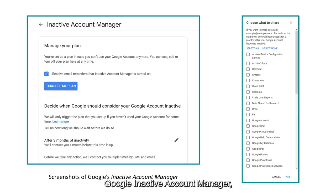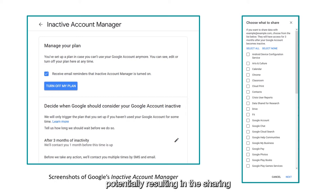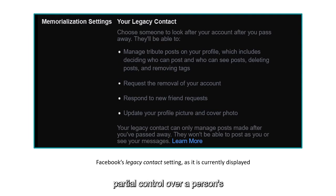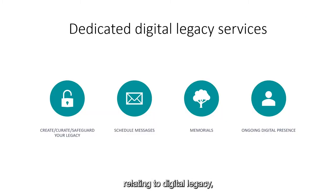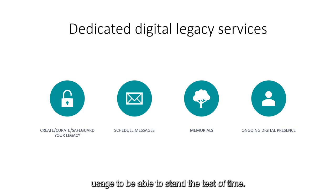Google, in 2013, developed the Google Inactive Account Manager, which operates on a form of the deadman switch — accounts that have been inactive for a given amount of time will trigger predefined steps, potentially sharing specific parts of the user's Google data with named individuals. Facebook introduced in 2015 a legacy contact setting, in which a named individual can have partial control over a person's Facebook profile after they have died. Many other tech ventures offer functionalities including curation of meaningful data, scheduled messages, memorials, and even avatars and chatbots representing the deceased, though many fail to achieve enough usage to stand the test of time.